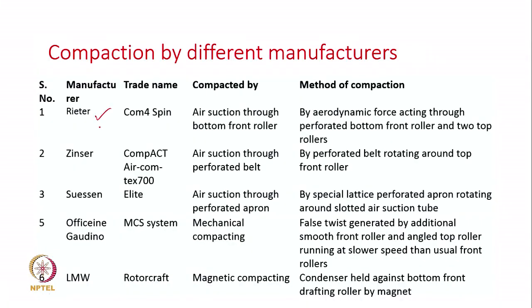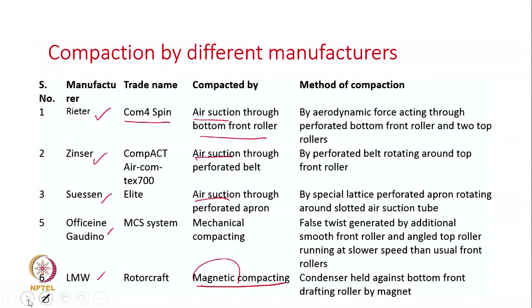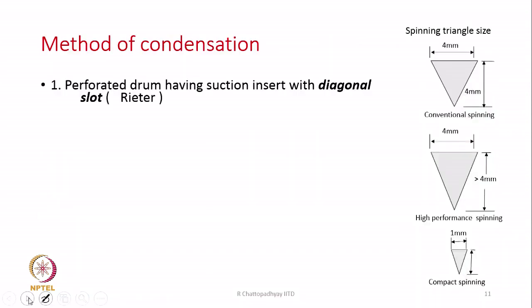Here is a table showing different manufacturers and their compaction methods. Mostly it is air suction — pneumatic means — and in the case of LMW, we have magnetic compacting. We will now discuss how each method is done.